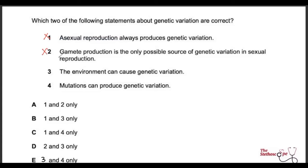Statement three says the environment can cause genetic variation — this makes sense. If you're exposed to UV radiation or X-rays over a long period, you can expect mutations in your cells, resulting in genetic variation. Statement four says mutation can produce genetic variation — absolutely, this is one of the major drivers of evolution. So only statements three and four are correct.